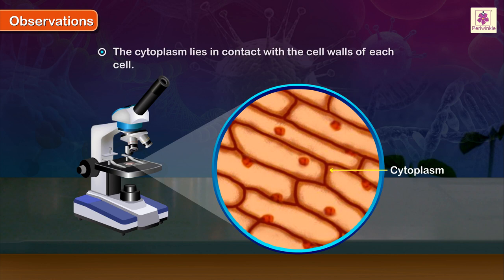The cytoplasm lies in contact with the cell walls of each cell. The cytoplasm is stained more densely than the cell walls and the vacuoles.